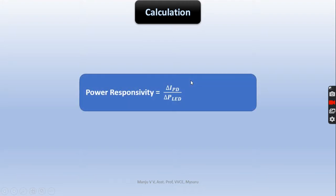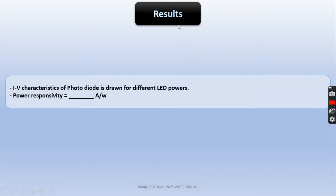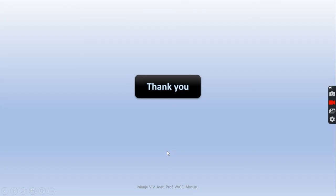Finally, we come to the calculation part, where we find the power responsivity using the formula: IPD divided by delta PLED. The results are: the IV characteristics of the photodiode are drawn for different LED powers, and the power responsivity is calculated using the slope of the graph. Thank you.